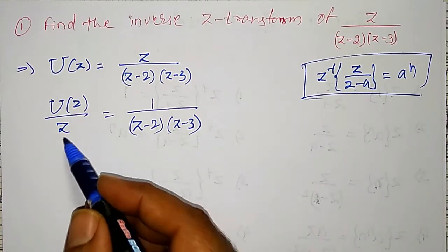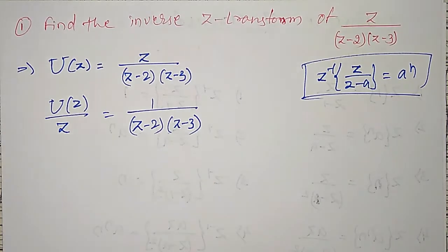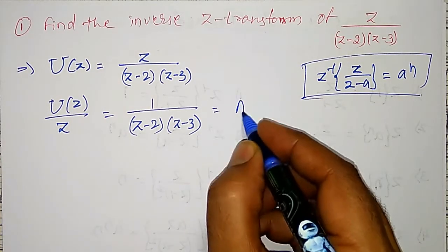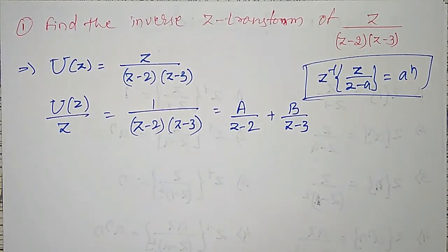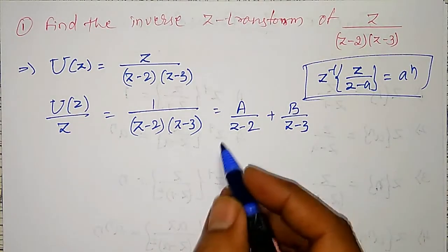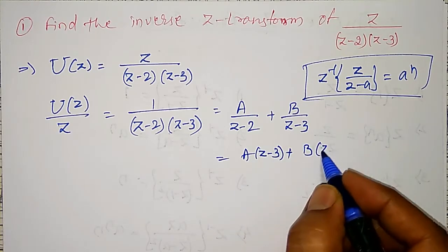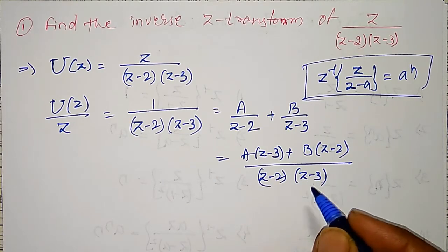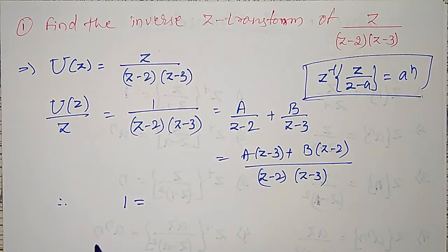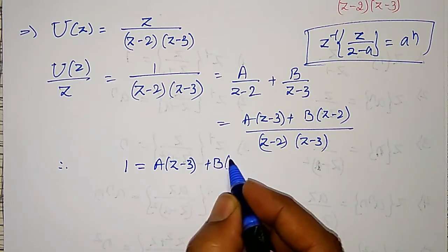Because I want z in the numerator, that is why I have shifted z to this side. Now, since these are linear factors, I will find the partial fractions. I can write this as A divided by z minus 2 plus B divided by z minus 3. Taking LCM and simplifying, I get A into z minus 3 plus B into z minus 2, all divided by z minus 2 into z minus 3. Therefore, 1 equals A into z minus 3 plus B into z minus 2.